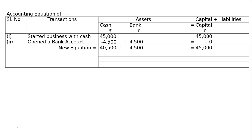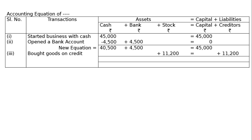Third transaction: bought goods from Messrs Son & Company for rupees 11,200 on credit. Because a name is given, this is a credit purchase. Stock will increase by 11,200 — goods means stock. If a name is not given, it would be a cash transaction. Since the name is given, creditor will increase by 11,200.